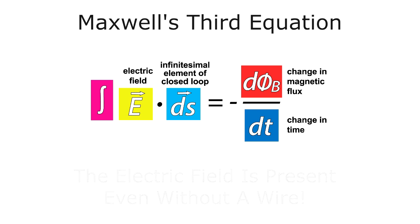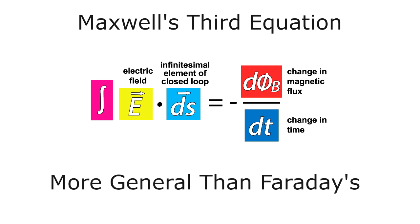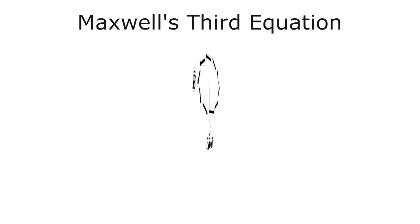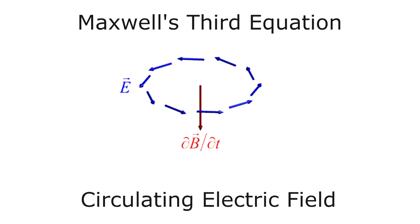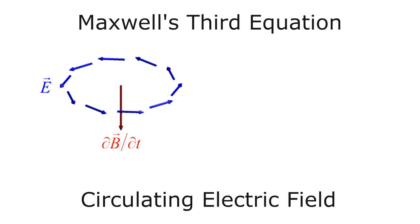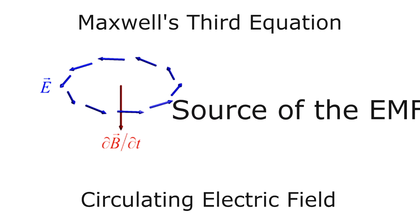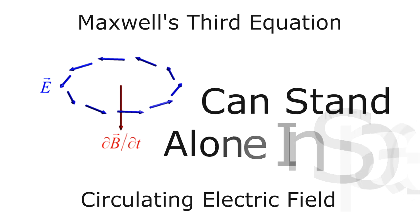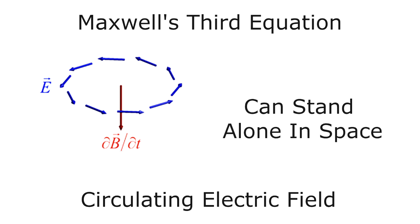That is to say there is still an electric field circulating from a changing magnetic field. So Maxwell's version of Faraday's law is more general and says that the EMF is equal to the line integral of an electric field over any closed loop, whether there's wire or not. A changing magnetic field induces a circulating electric field, and this circulating electric field is the source of the EMF.